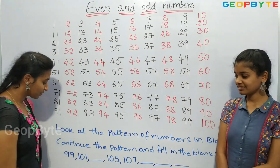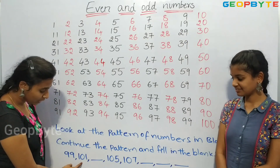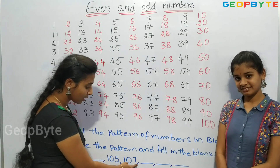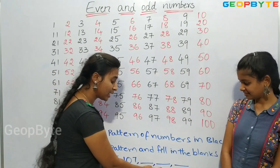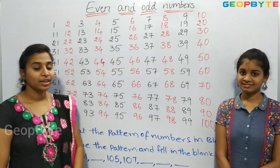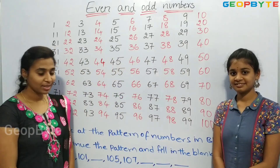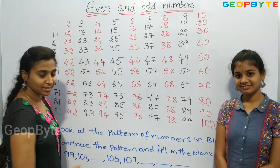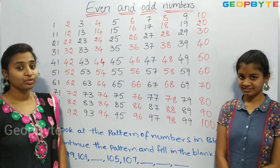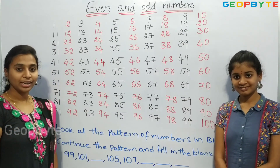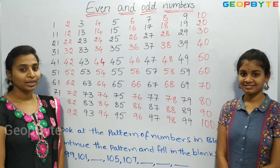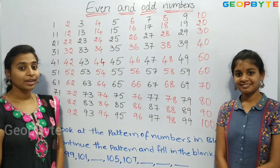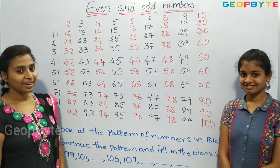Let us see this sequence: 99, 101, dash, 105, 107, dash, dash. Now let us fill these blanks. Children, we have 99 and 101. If we add 2 to 99 we get 101. Similarly, if we add 2 to 101 we get 103. Let us write.